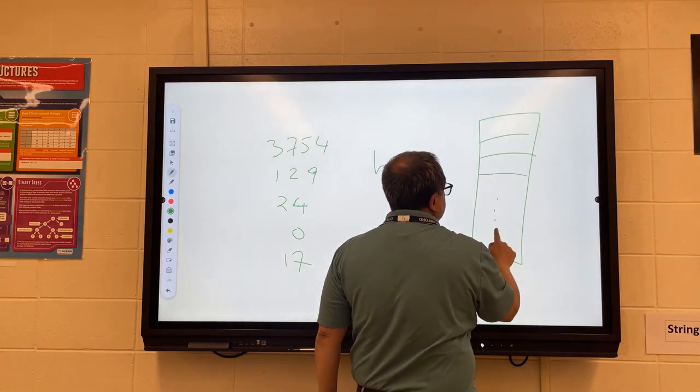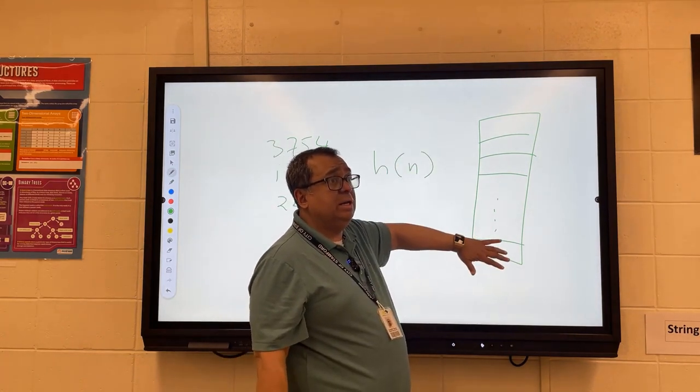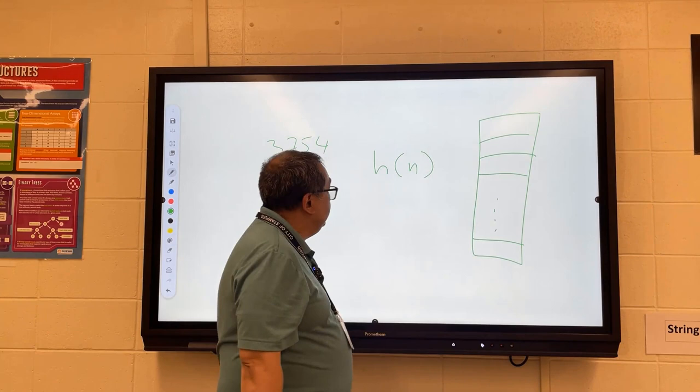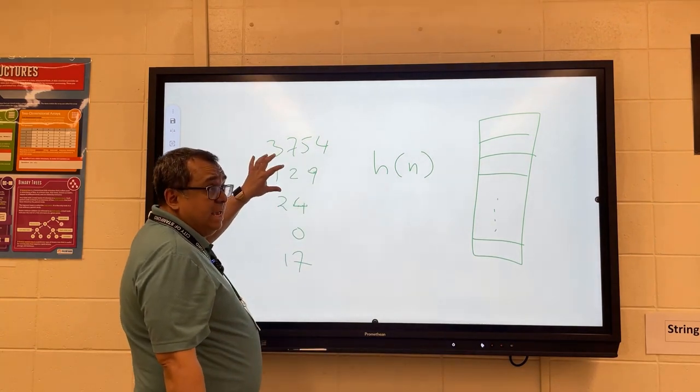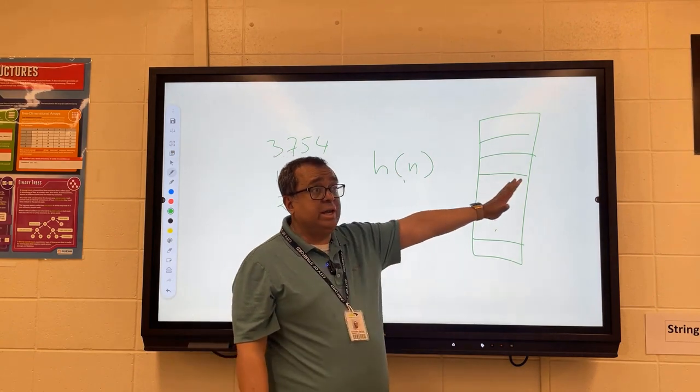Then the hash code has to be in a range 0 to 9. It has to be a valid index into this array. We take the data that we want to store, we pass it through the hash function, it tells us what index to store it at.